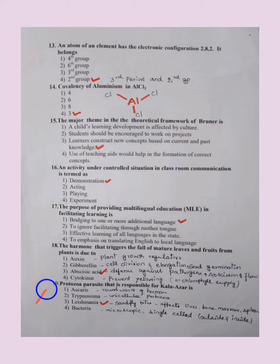Protozoa parasite that is responsible for kala azar is. The answer is leishmania. That is a kind of sand fly bite that affects liver, bone marrow, and also spleen. That is a protozoa parasite type. Let's also check the other answers. Ascaris, that is a kind of roundworm in humans. Trypanosoma, unicellular protozoa. About bacteria we all know that is a microscopic single cell organism that affects both from outside and inside of the object. So for this 19th question the answer is leishmania.